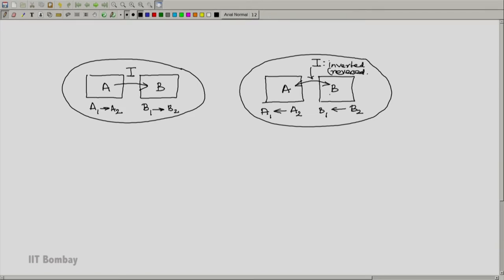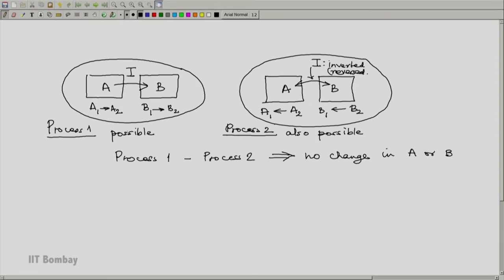And this reversal is such that if this process is executed and then the second process is executed, everything returns to its original state. That means if this process is possible, this process is also possible. And the combination is such, let me call this process 1 and let me call this process 2. Suppose we have process 1 followed by process 2. Both are possible. Then the net result should be absolutely no change in A or B because both are back at the state A1. And of course, no change in any other system.